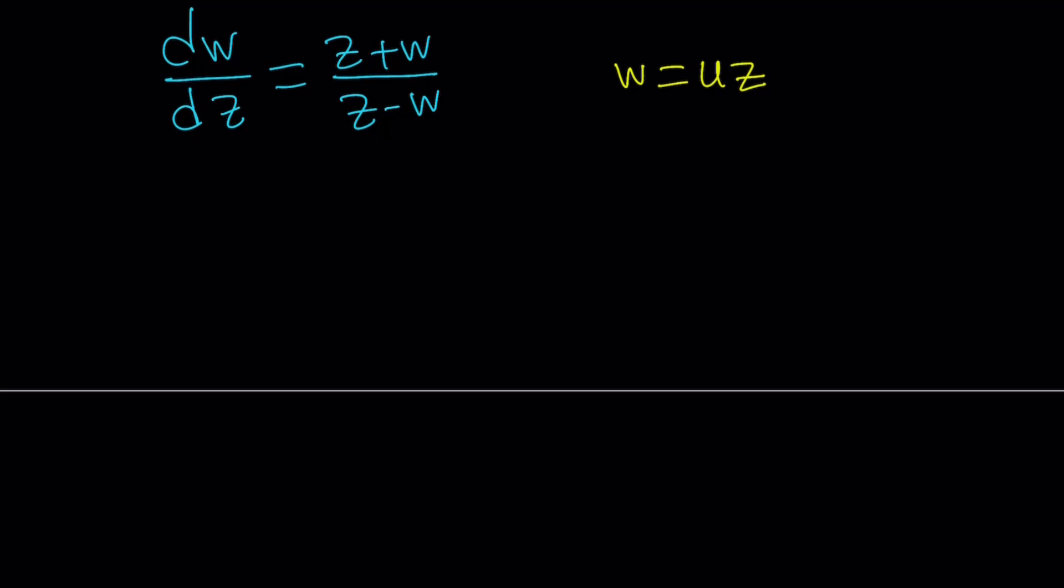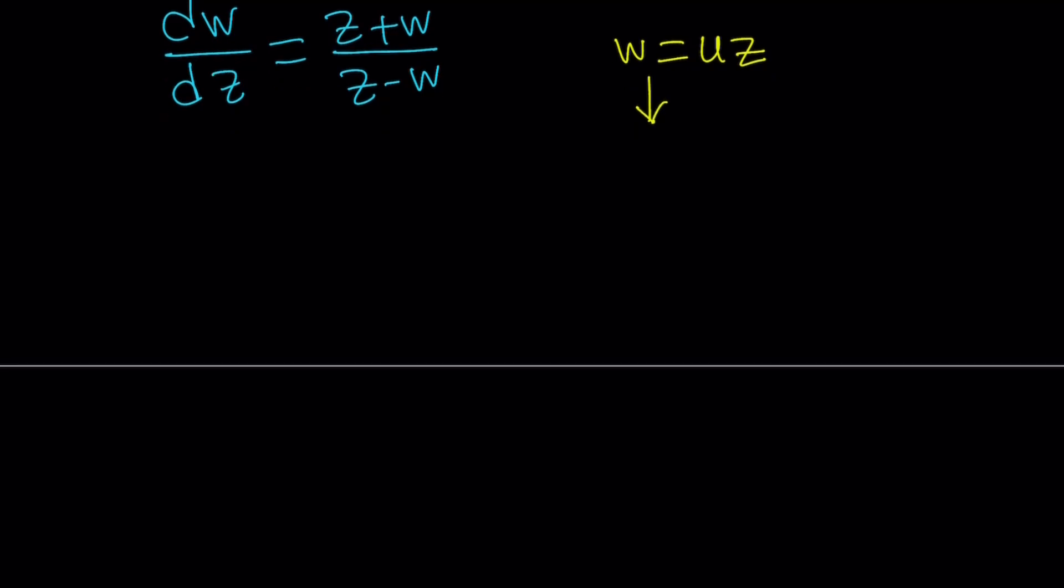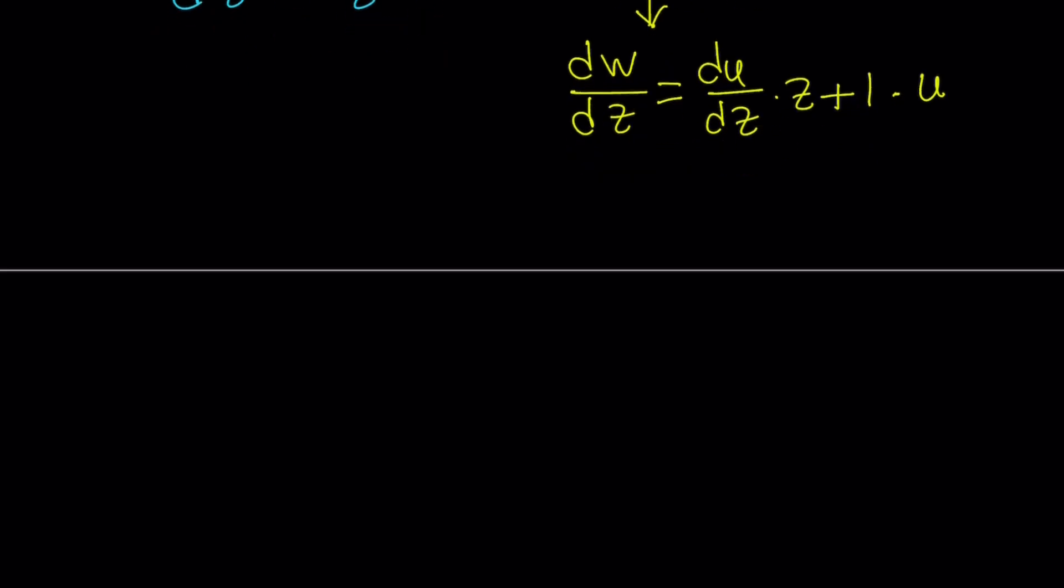This type of substitution is going to work. But before we get into the substitution, let's go ahead and differentiate both sides here to find dw over dz, which we're going to use the product rule for. The derivative of u with respect to z multiplied by z plus the derivative of z with respect to z, which is 1, times the first function u. So, let's arrange this a little bit. dw over dz can be written as z times du over dz plus u.